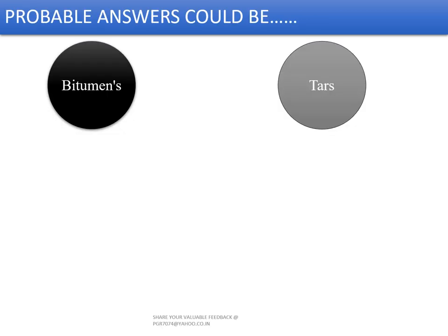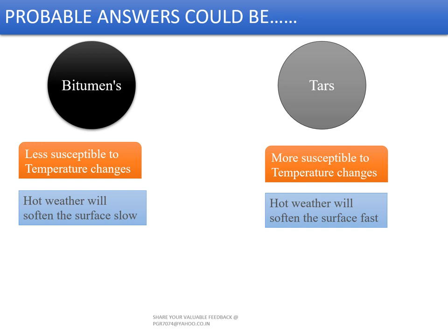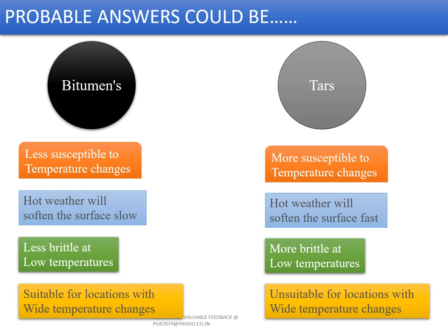The difference between bitumen and tar: bitumens are less susceptible to temperature changes whereas tars are more susceptible. Hot weather softens the surface slowly in the case of bitumen, but quickly in the case of tar. Bitumen is less brittle at low temperatures whereas tar is more brittle at low temperatures. Bitumen is suitable for locations with wide temperature ranges whereas tar is unsuitable for such locations.